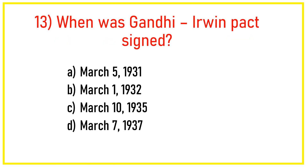Q13. When was the Gandhi-Irwin Pact signed? Answer: Option A — March 5, 1931.